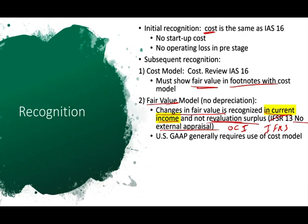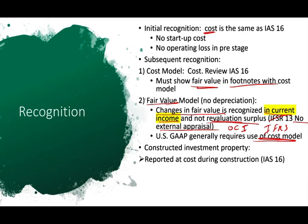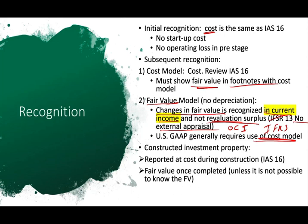If you are constructing an investment property, you report it at cost during construction because it is not yet ready. Once completed, you are supposed to report it at fair value unless it's not possible or you don't know the fair value. Also note: US GAAP generally requires the use of the cost model, which is a difference between IFRS and US GAAP. Finally, there is a one-model rule — once you select the fair value or cost model for one item, you must apply it consistently to all items.